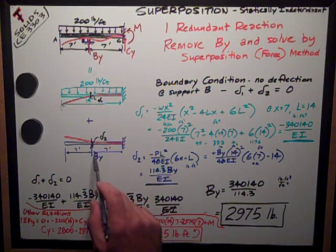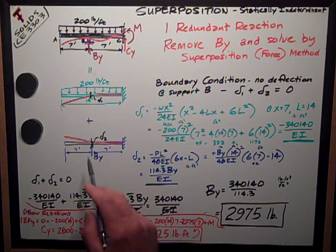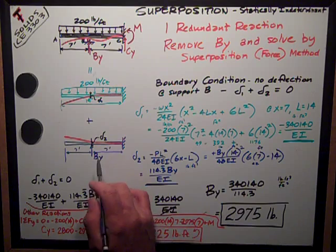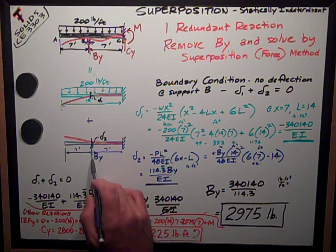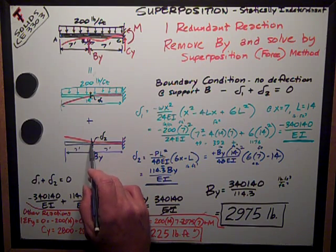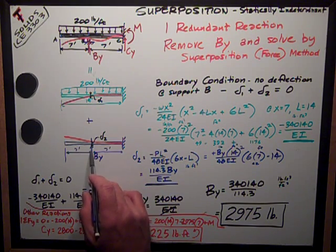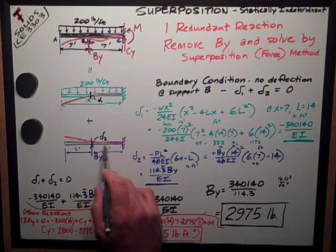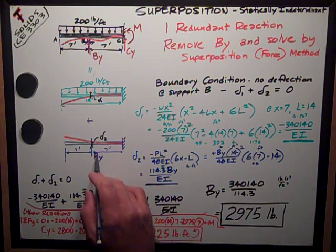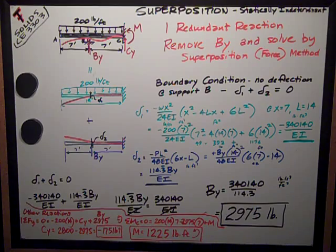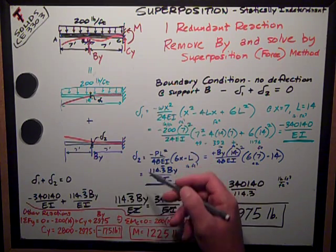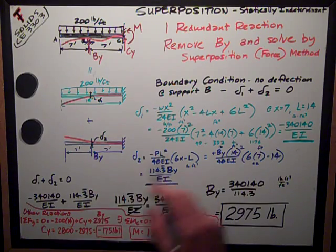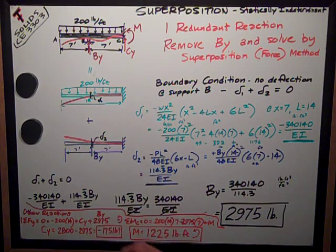And I want to superimpose this situation where I take the load off, but I put the unknown redundant force back in, BY, and I see how much it's going to deflect, how much a cantilever is going to deflect at that point from an equation due to an upward load, which is that support reaction. And I make those two deflections equal to each other because I have, in reality, I have zero deflection at that point.